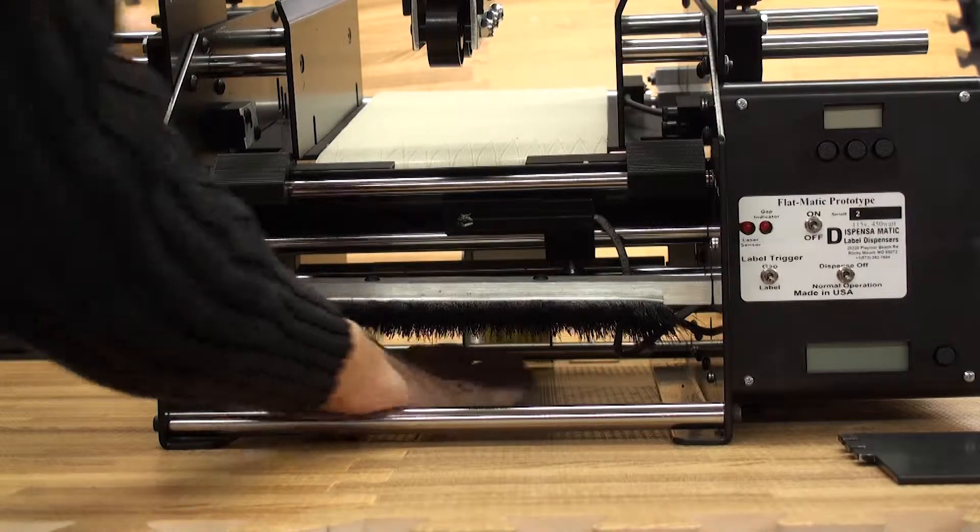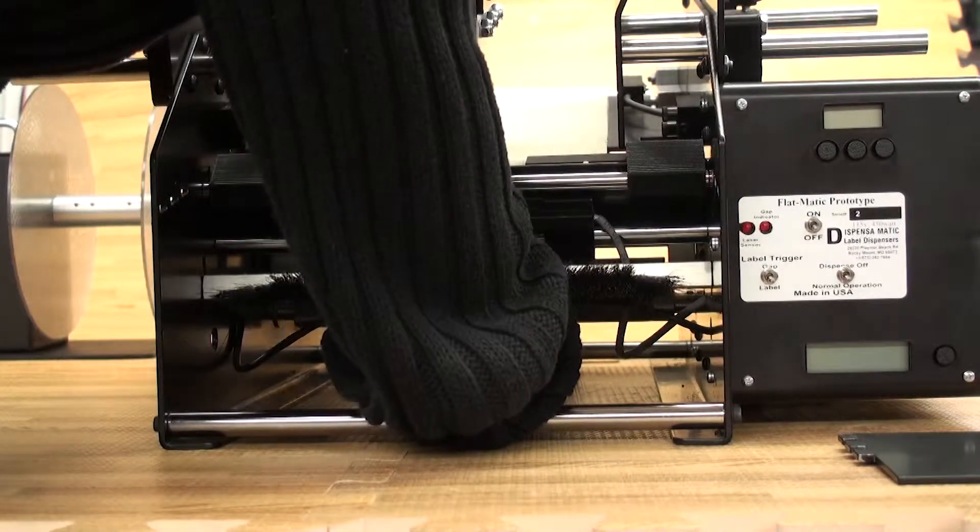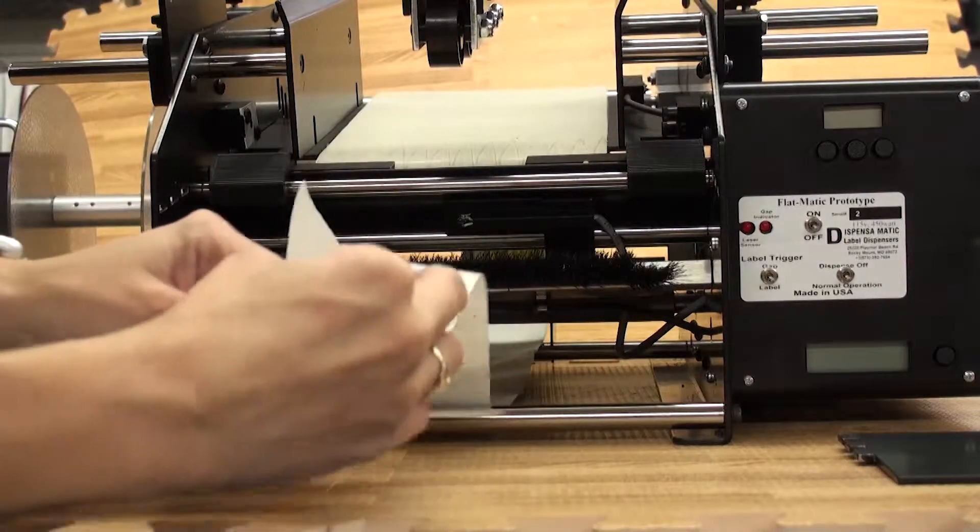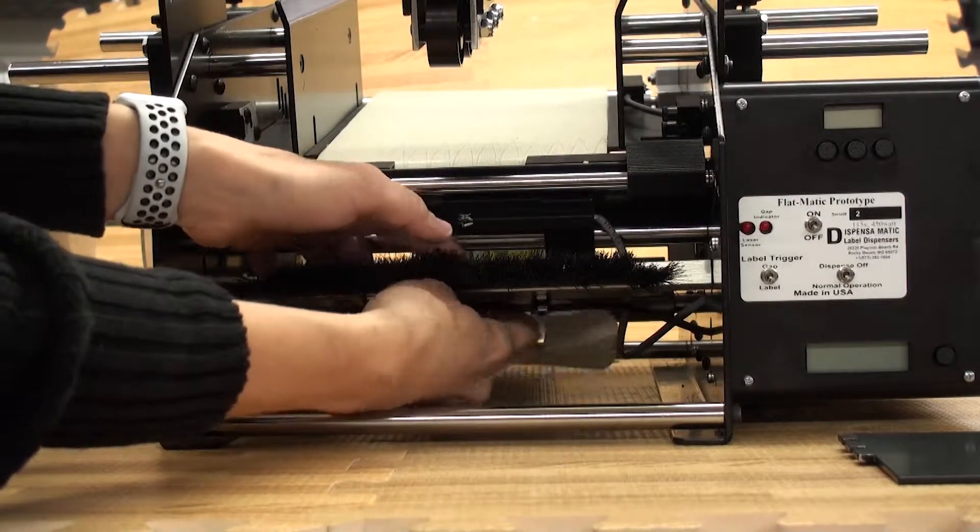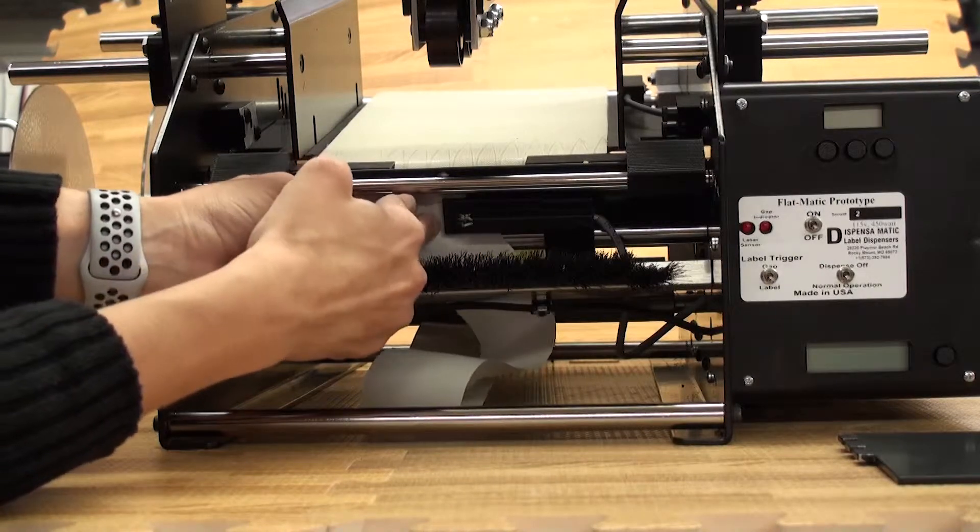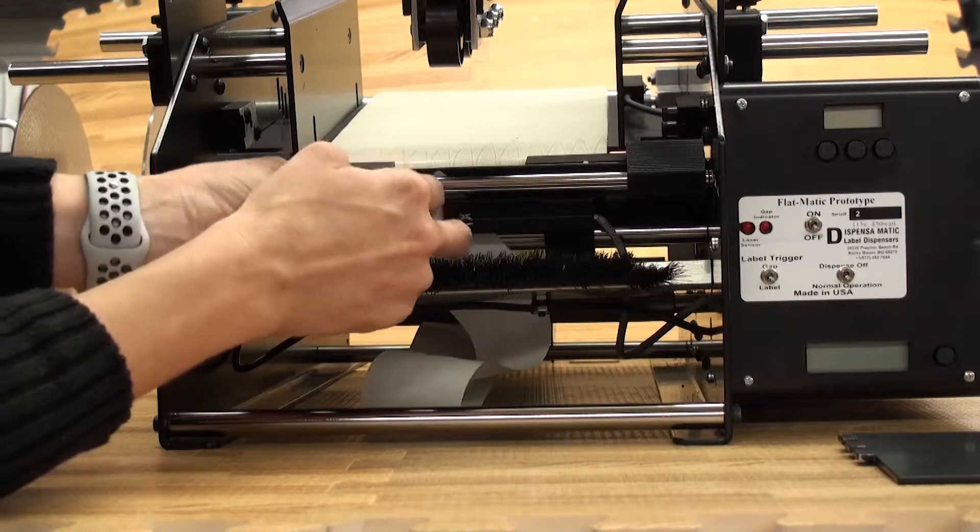With the labels facing down, bring them underneath the entire machine and towards the front. Thread the labels through the sensor and then between the front rod and the dispensing table.